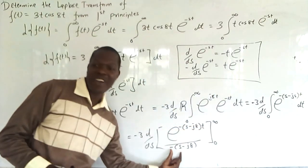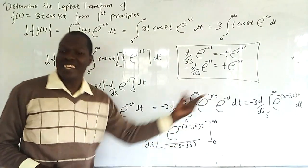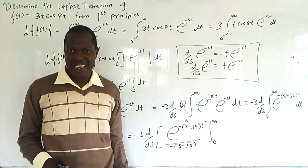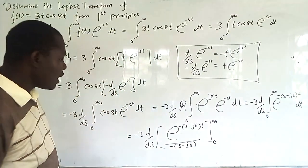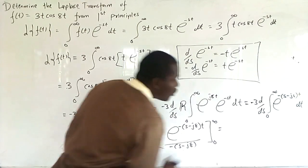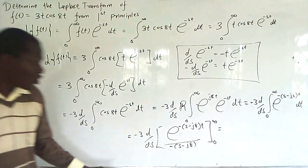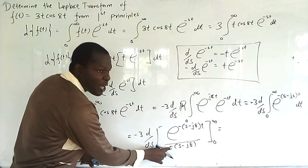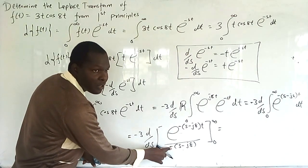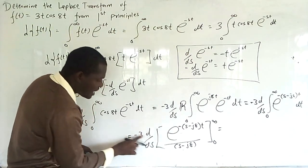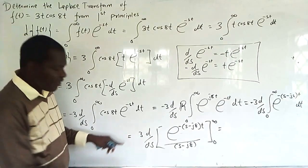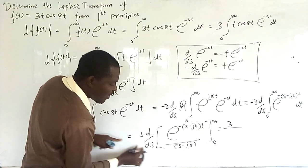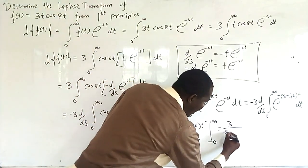Remember: in integration you divide by the constant, while in differentiation you multiply. Then apply your limits. The negative from outside disappears with the negative in the denominator, giving 3/(s - j8), but we need to evaluate the limits from 0 to infinity.